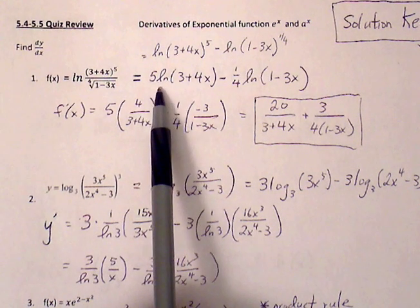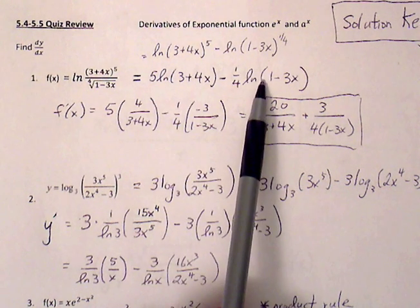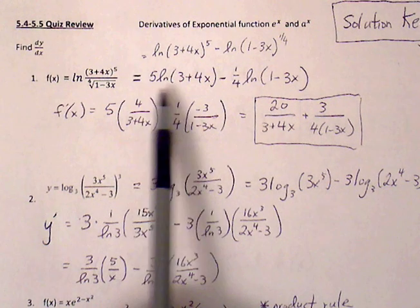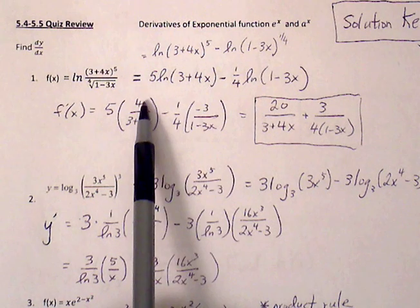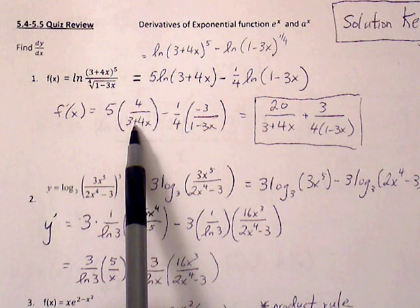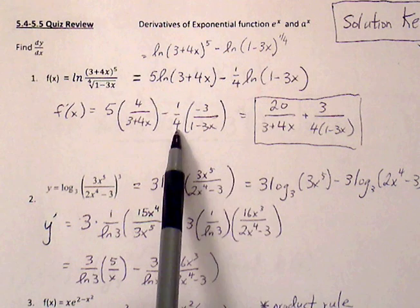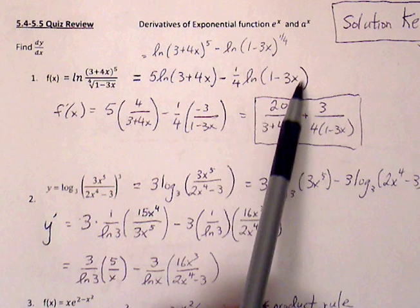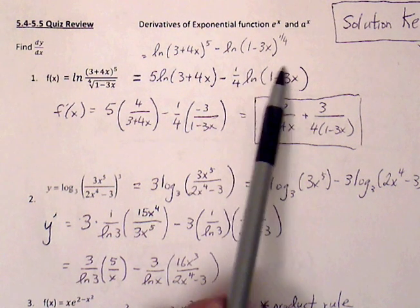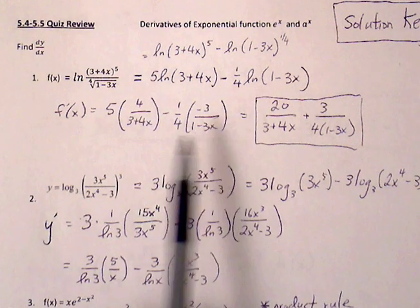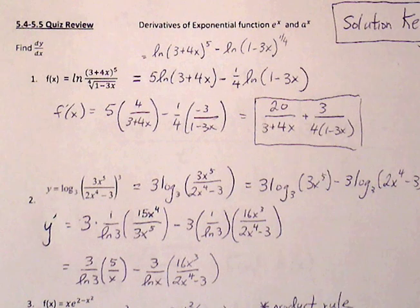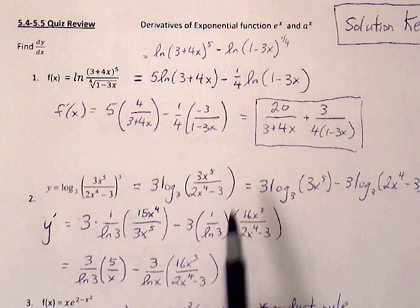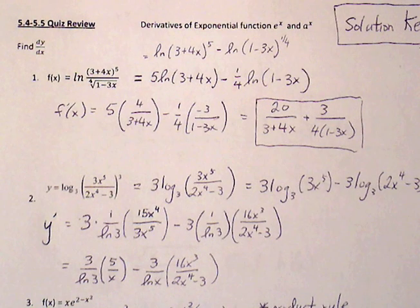The rule we need for natural log of u is u prime over u. The coefficient of 5 stays. The derivative of 3 plus 4x is 4, all over 3 plus 4x, minus the coefficient 1/4th stays — u prime over u — so the derivative of 1 minus 3x is negative 3, all over 1 minus 3x. Simplifying, we get 20 over 3 plus 4x, and the two negatives cancel, giving plus 3 over 4 times 1 minus 3x.